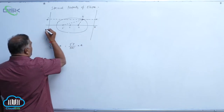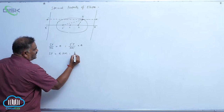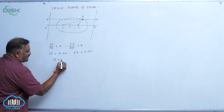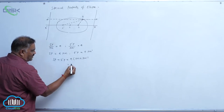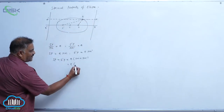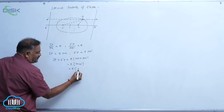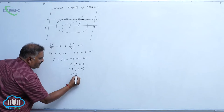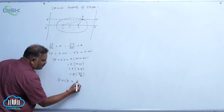It is Z and Z dash. SP is equal to E times PM. S dash P is equal to E times P M dash. Adding: SP plus S dash P is equal to E times PM plus P M dash. E into PM plus P M dash is nothing but M M dash. M M dash is nothing but Z Z dash — the distance between the two directrices. That is E into 2A by E. E gets cancelled.